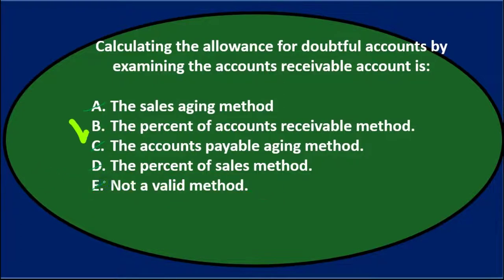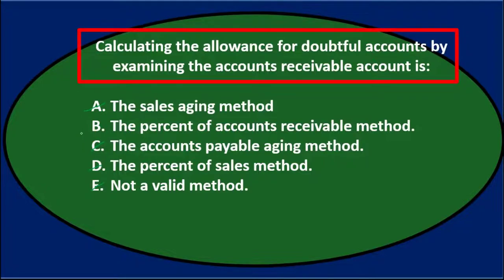So B looks like the correct answer. Calculating the allowance for doubtful accounts by examining the accounts receivable account is B — the percentage of accounts receivable method.